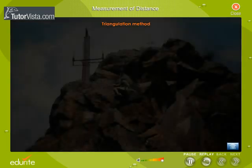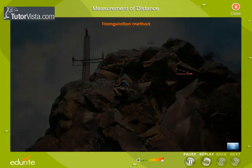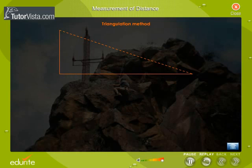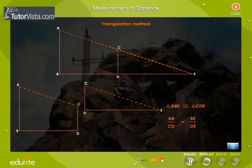Triangulation Method, which is used to measure the distance and the height, is based on the geometry of a triangle. Here we construct two similar triangles and then find the distance between the observer and the object by using the properties of similar triangles.